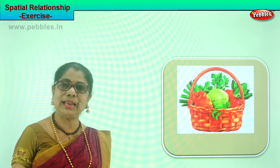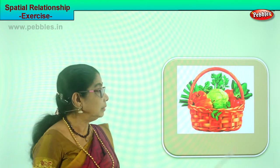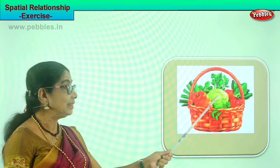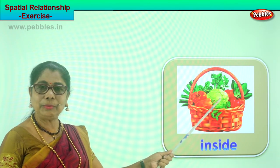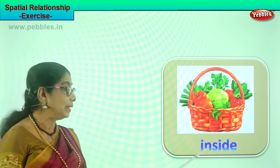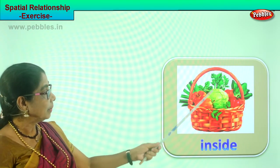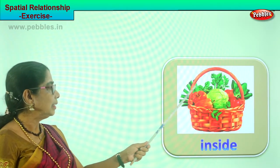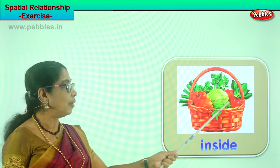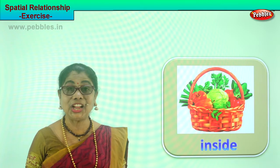Let's look at another picture and you tell me what's happening. There is a basket of fruits and vegetables. Where are the vegetables? Inside the basket. Where are the vegetables placed? Inside the basket. All the vegetables — the greens, the cabbage, tomatoes, leeks, celery — they are all inside the basket.